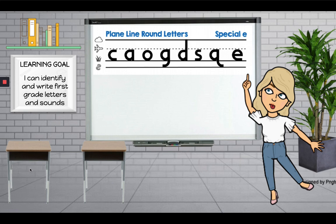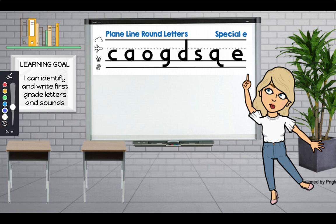Now let's practice writing our letters. These are all plain line, round letters because they start on the plain line and they have round lines. Now when I look at the letter D, I ask myself why is this a plain line letter if it goes all the way up to the skyline? I'll tell you why — we don't start writing the letter D on the skyline. We start on the plain line. This helps first graders understand the difference between the letter D and the letter B because we start the letters in different places.